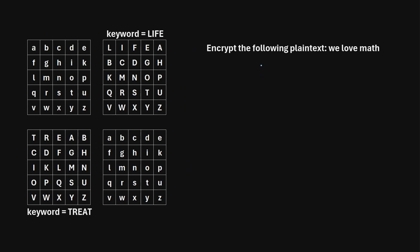Let's say that we would like to encrypt the following plaintext: "We love math." The first step to encrypting this is we need to split up the plaintext into letter pairs. So our first pair of letters will be W, E — then L, O — then V, E — then M, A — and T, H.